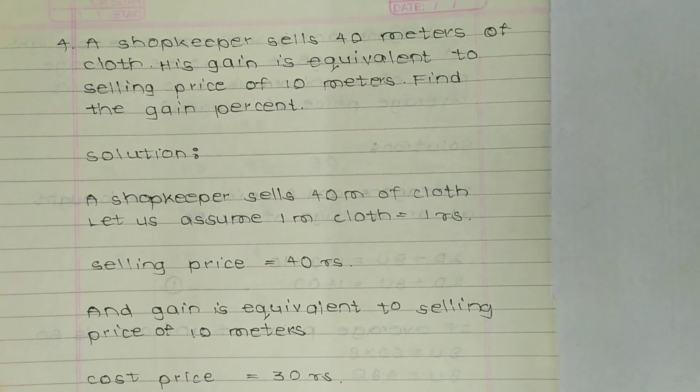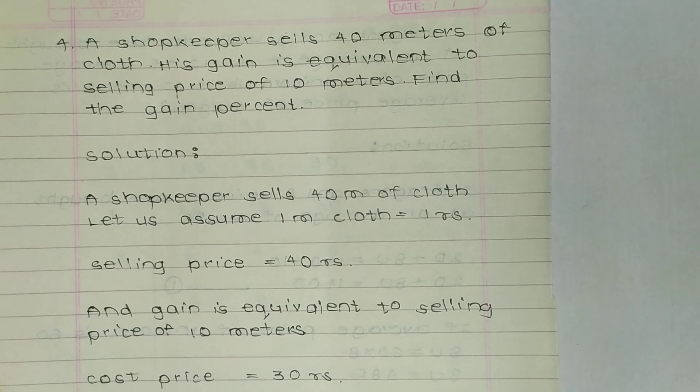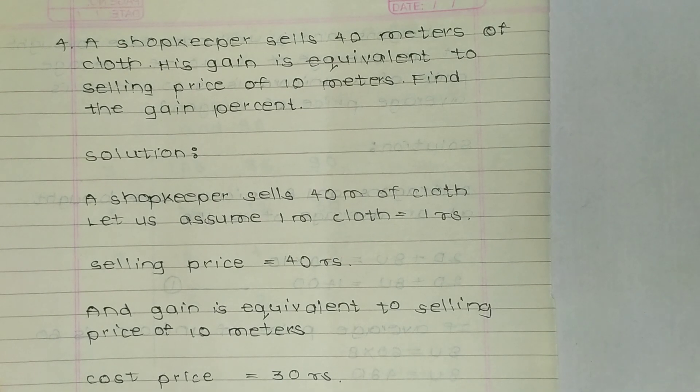Question: A shopkeeper sells 40 meters of cloth. His gain is equivalent to selling price of 10 meters. Find the gain percent. So a shopkeeper is selling 40 meters of cloth, now his gain is...